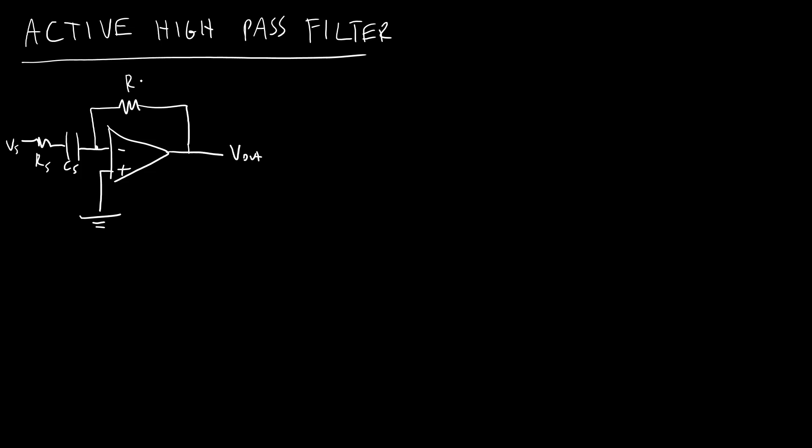For the active high-pass filter, we are going to have a very similar setup. We're going to have our op-amp with the non-inverting input tied to ground. We have just shuffled the resistors and capacitors around a bit. So now we have both a source resistor and a source capacitor, RS and CS, in series with the source, and a feedback resistor connected over to V out. So we have our feedback resistor RF.